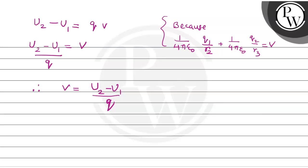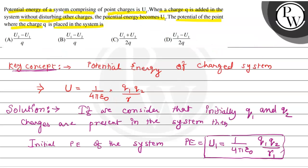This is our calculated value. We can see that this matches option A: U2 minus U1 by Q. This is the right option. I hope you understood it well. Best of luck. Thank you.